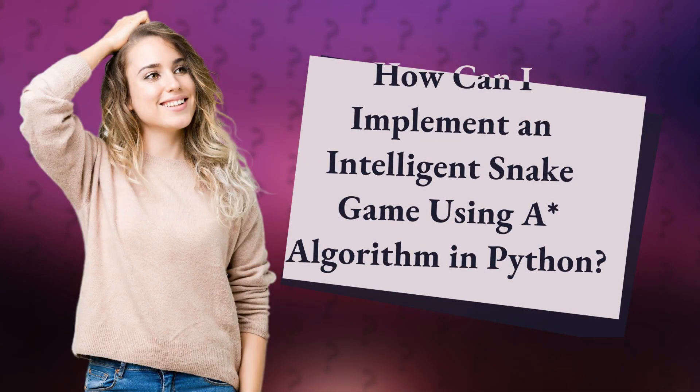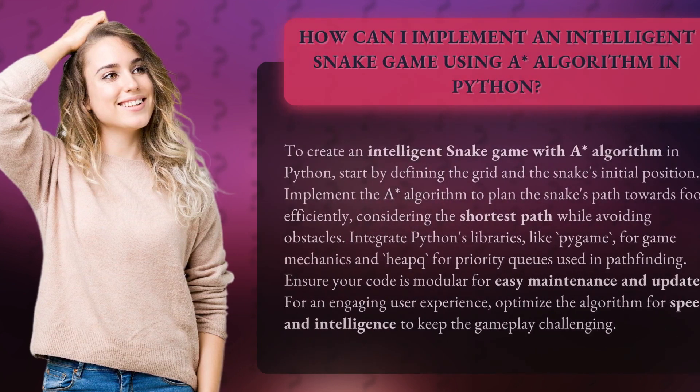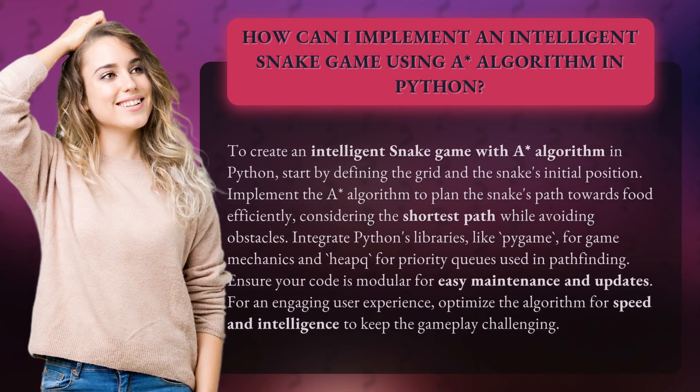How can I implement an intelligent snake game using the A* algorithm in Python? To create an intelligent snake game with the A* algorithm in Python, start by defining the grid and the snake's initial position. Implement the A* algorithm to plan the snake's path towards food efficiently, considering the shortest path while avoiding obstacles.